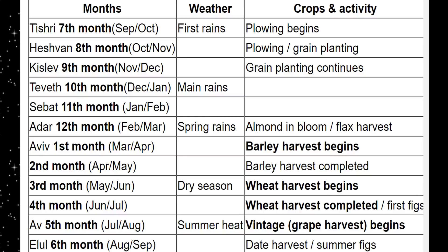Isn't it interesting — the Holy Ghost had me giving a message a few months ago about the almonds. Remember, the almonds have to do with being awake, to be aroused, to be alert. Now we look at between March and April spiritually, and we're at barley harvest begins. That's where we are right now.